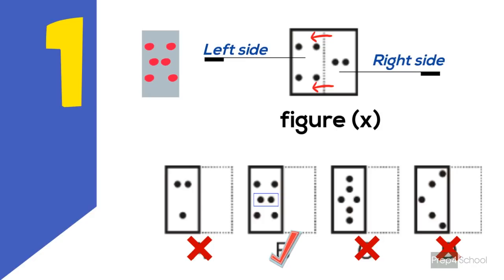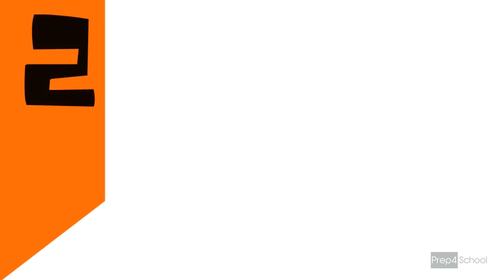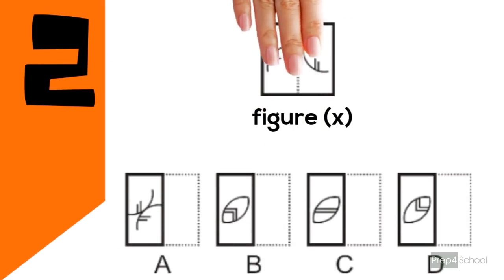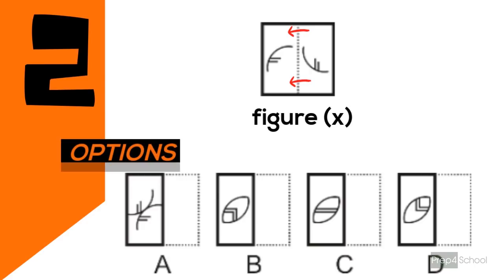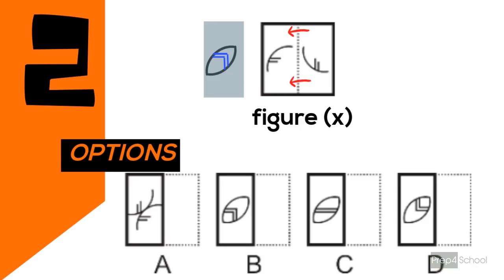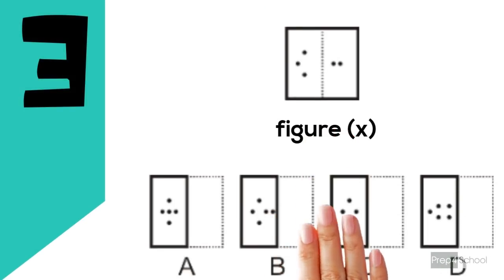Let's take another problem. Here we need to fold the paper along the dotted line and find the corresponding image from the given options. When it is folded, the bracket symbols come close to each other, and the vertical lines will be like this. So the corresponding answer is option B.